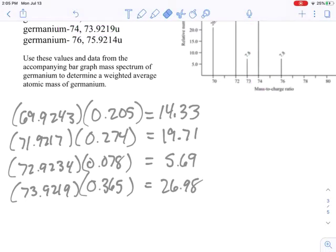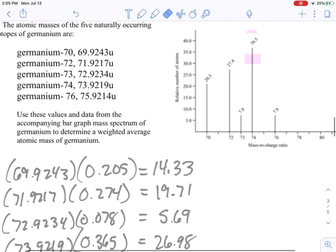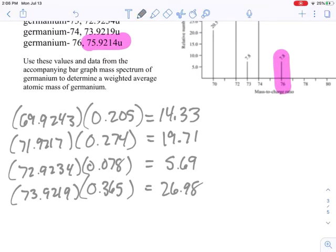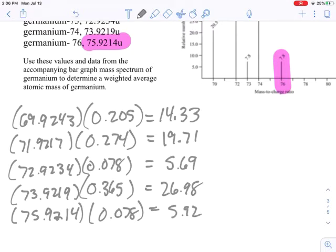And finally, our last one here. That's going to be 75.9214. Again, 0.078. Don't forget to move that decimal place twice. Assuming I've done my math right, that's 5.92.